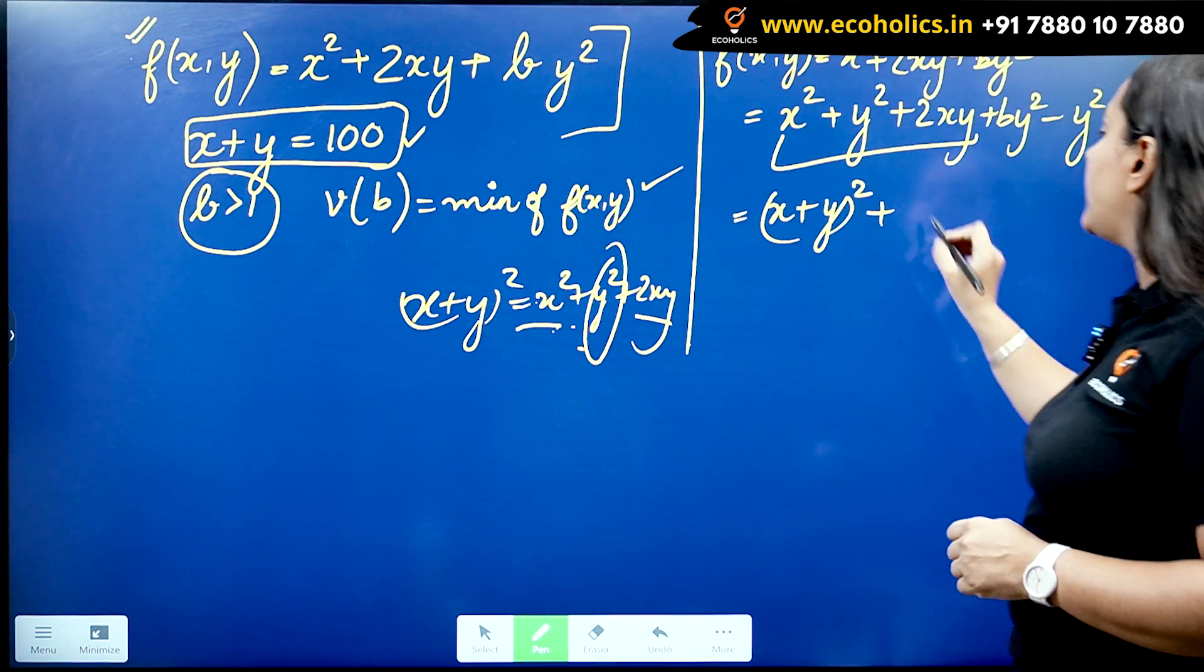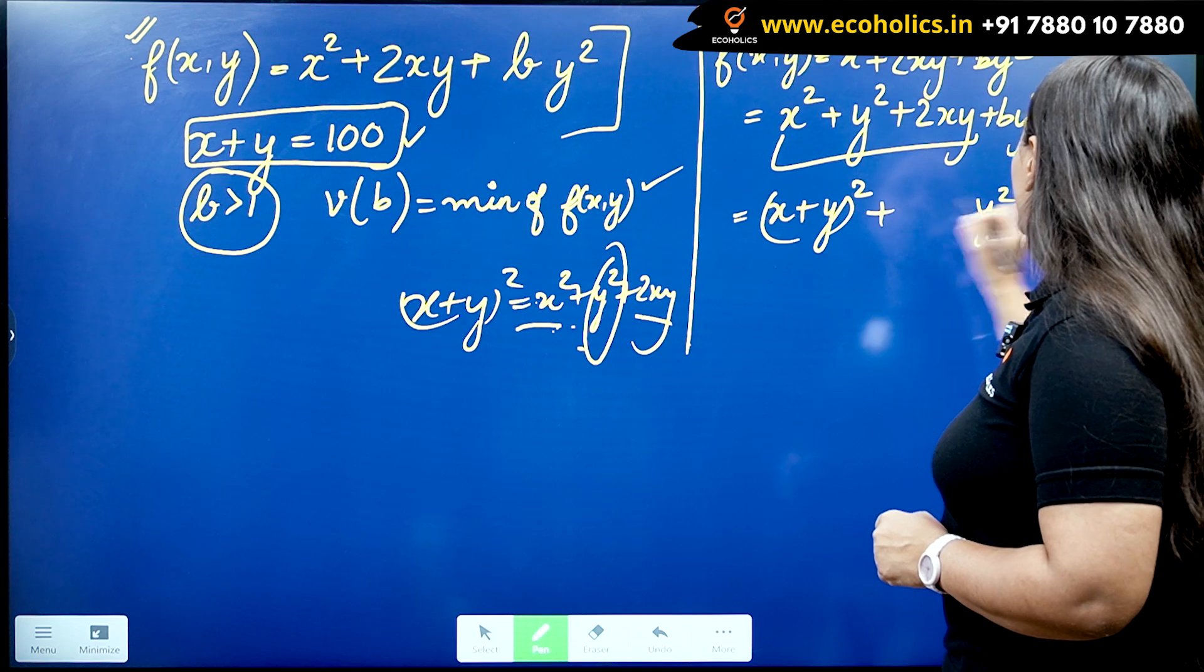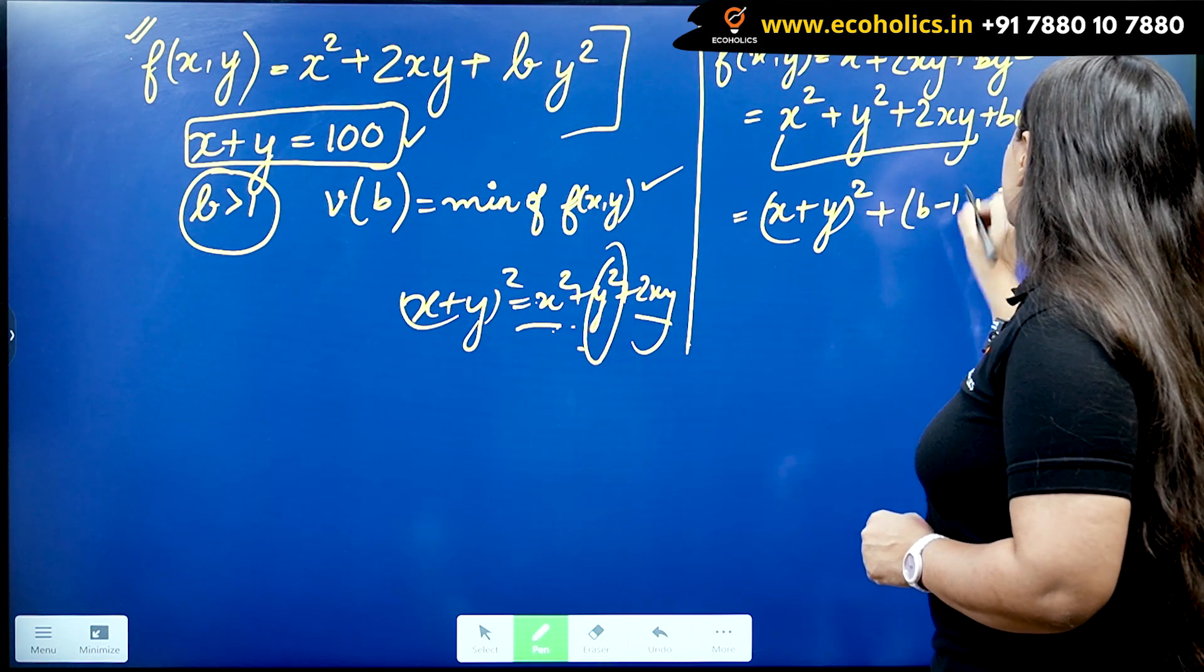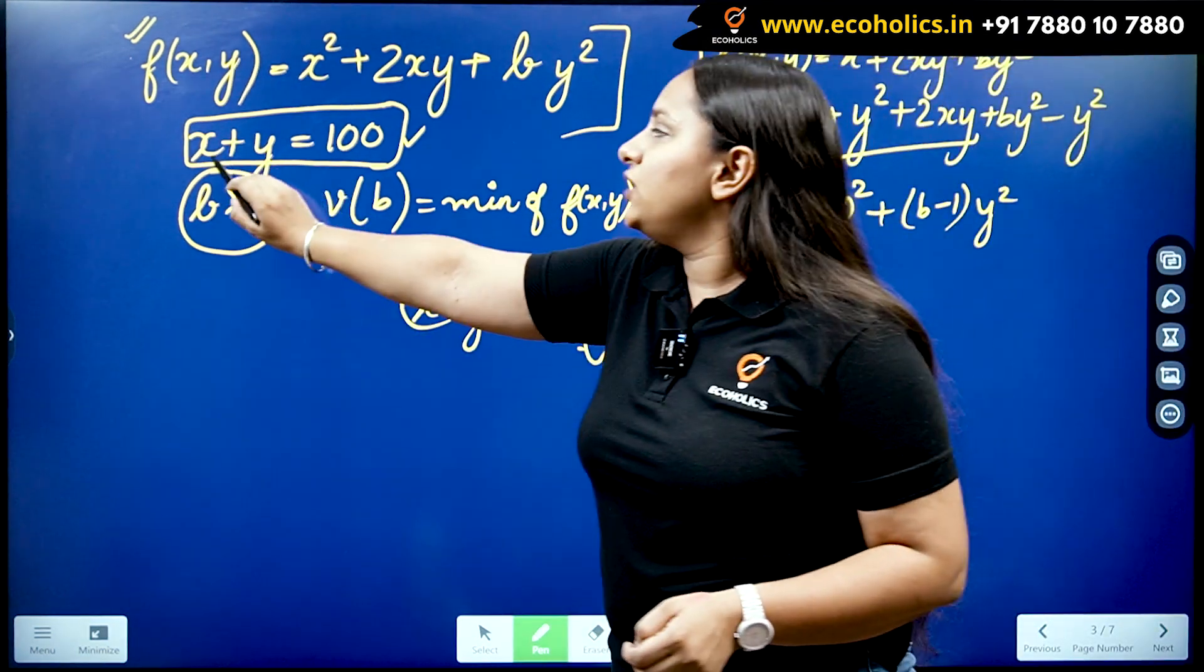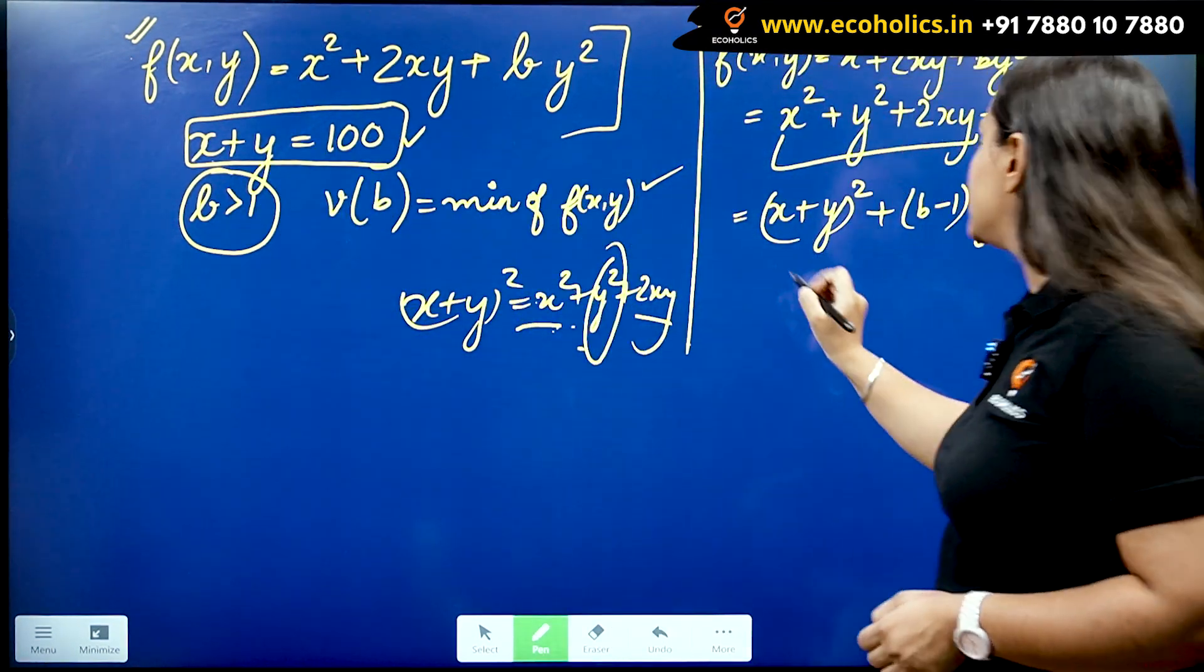So that these terms give me (x + y)² and upon here if I take y² common, I would be left with (b - 1). A major portion is done.